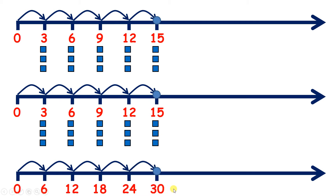Now what do you notice about our number line at the bottom? We have the numbers 6, 12, 18, 24, and 30 — so we have the six times table.